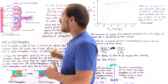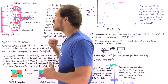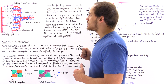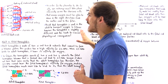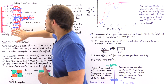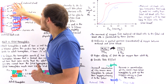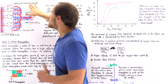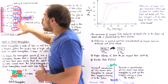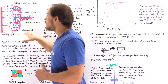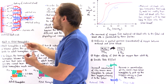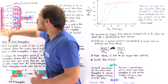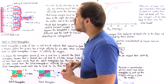Within the chorionic villi, we have tiny blood capillaries that belong to the circulatory system of the fetus. These entire chorionic villi are found inside a pool of maternal blood, which essentially oozes out of maternal blood vessels found in close proximity.